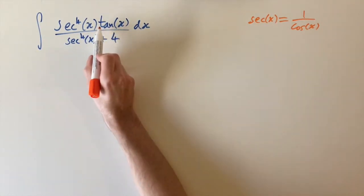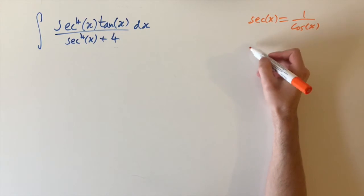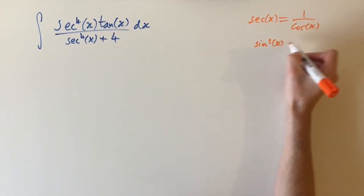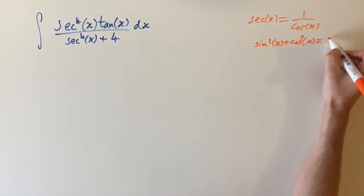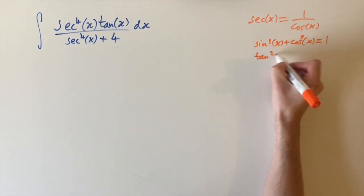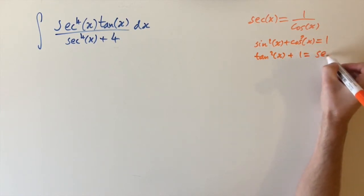Now let's try and remember a few of the properties that sec and tan share. So just using the standard identity that sine squared of x plus cosine squared of x equals 1, we can divide this whole equation by cosine squared of x to get tan squared of x plus 1 equals sec squared of x.